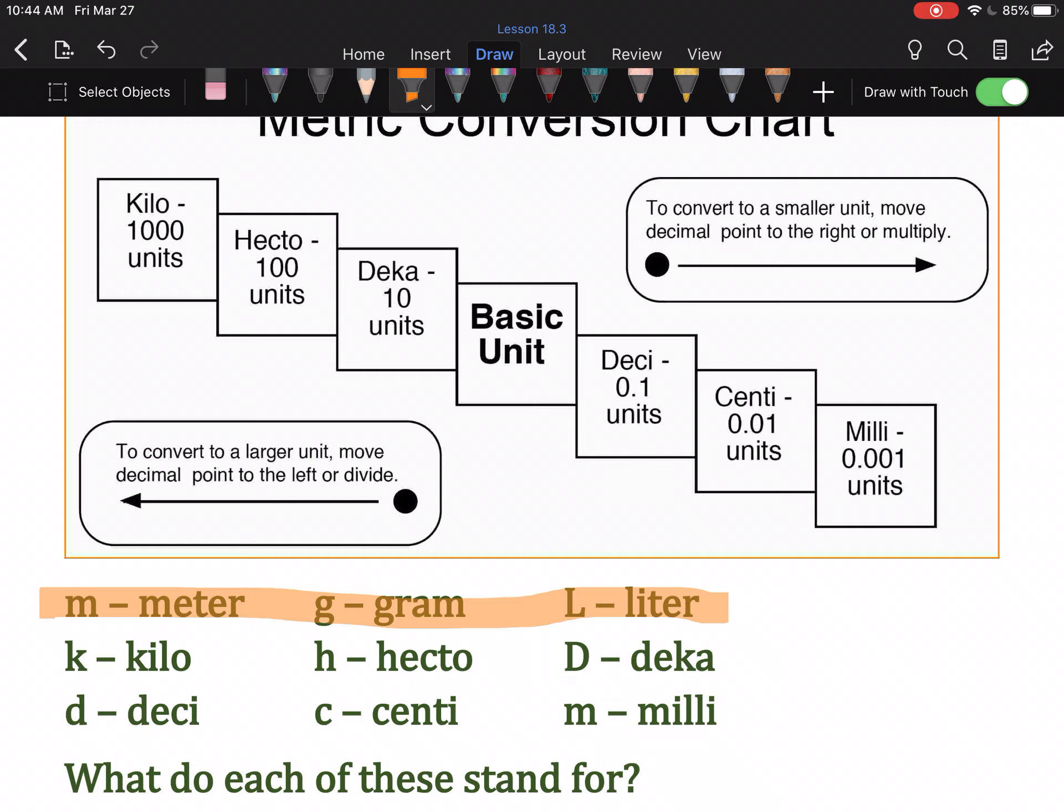Lowercase d is deci. So, that's decimeter, decigram, deciliter. Lowercase c puts the prefix centi. So, that's centimeter, centigram, centiliter. And M is the prefix for milli, which is millimeter, milligram, milliliter.